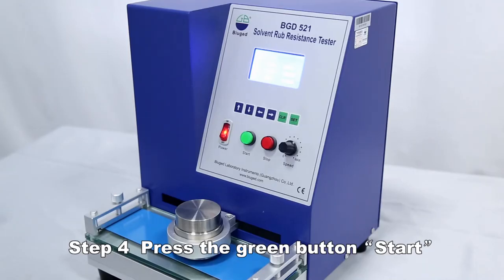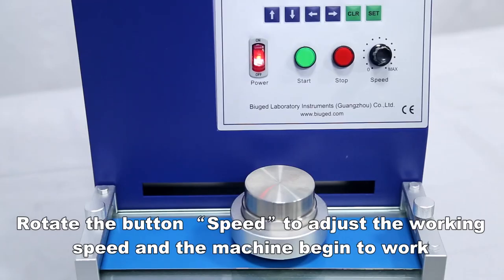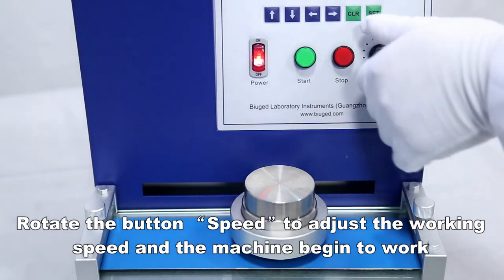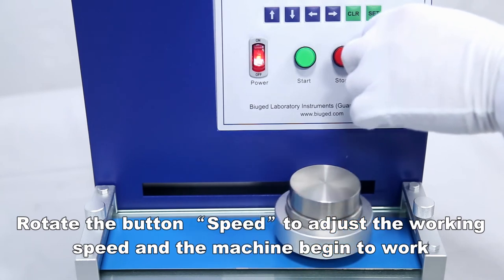Press the green button start. Rotate the button speed to adjust the working speed and the machine begins to work.